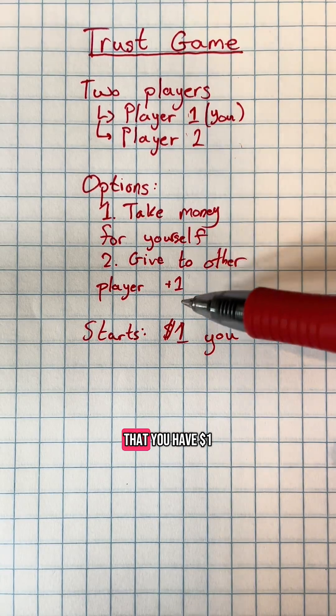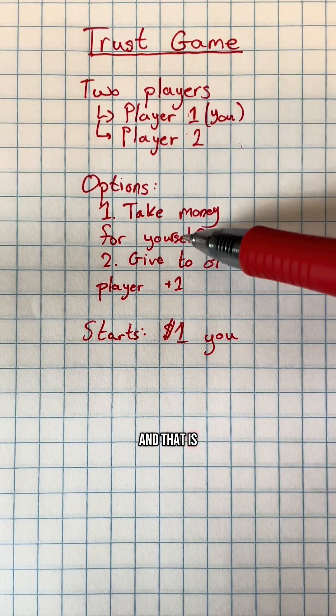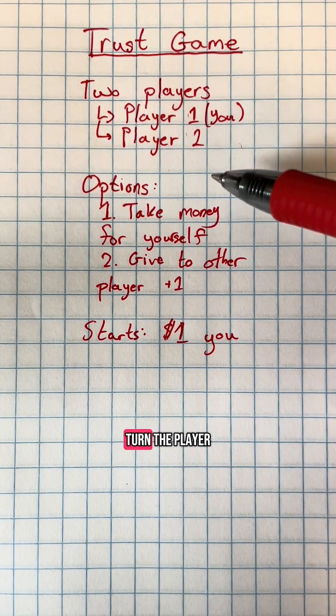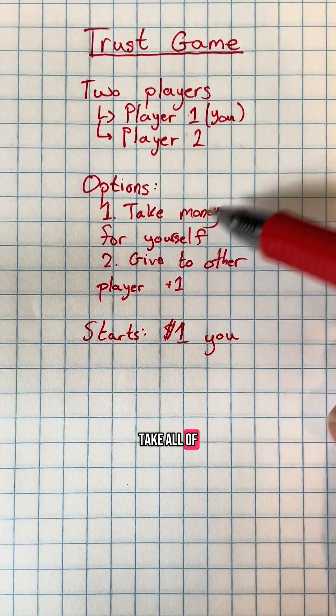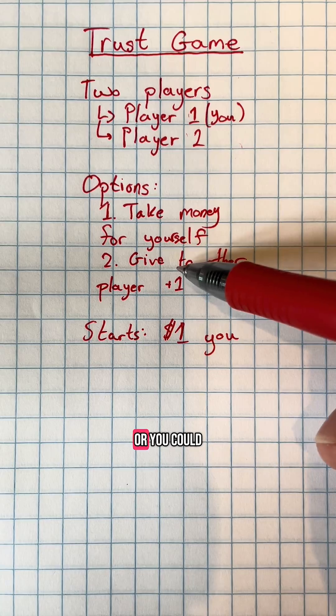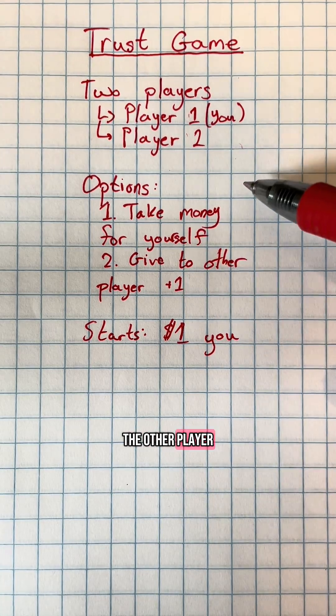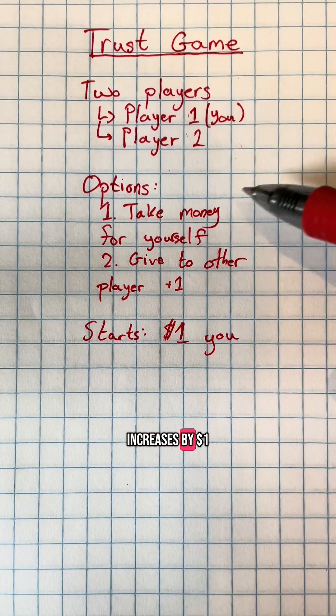The way the game starts is that you have one dollar, and that is the pot of money. On every turn, the player whose turn it is has two options: either you can take all of the money in the pot for yourself, or you could give it to the other player, and then the pot of money increases by one dollar.